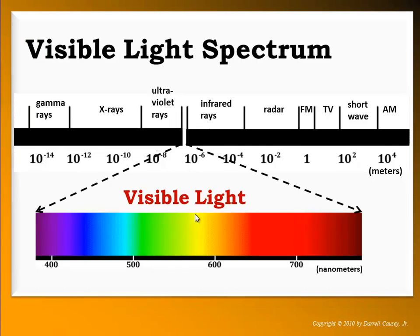Visible light is a very small but very important portion of the electromagnetic spectrum. It was worked with first because it's the easiest to detect — we can detect visible light with the naked eye, and we can take and refract it to get pretty rainbows.